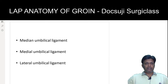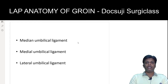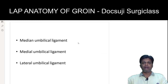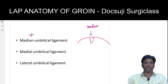In laparoscopic anatomy of the groin, there are three ligaments that are important anatomical landmarks. Number one is the median umbilical ligament, number two is the medial umbilical ligament, and number three is the lateral umbilical ligament. These are very important landmarks, and based on them you can identify the types of hernia. The median umbilical ligament is nothing but the obliterated urachus.